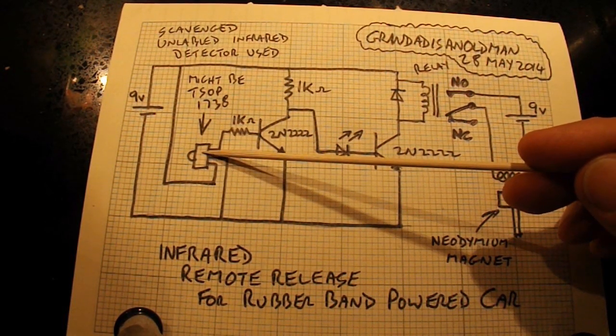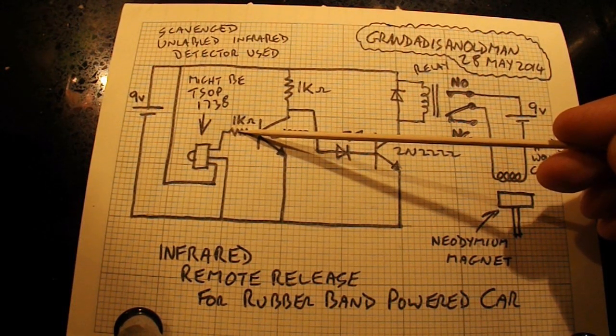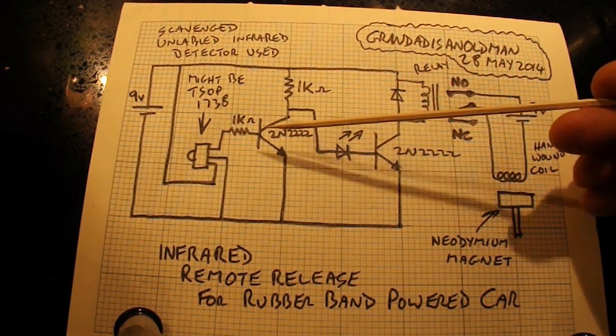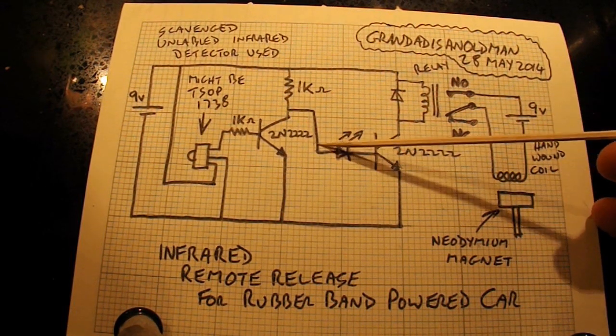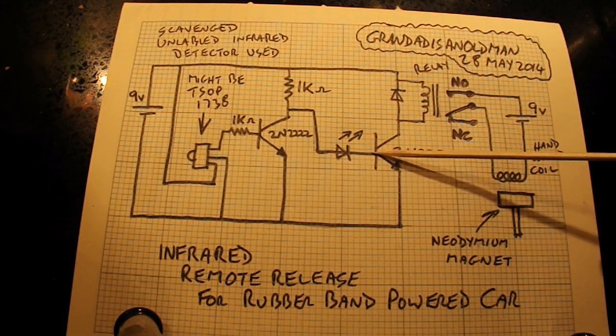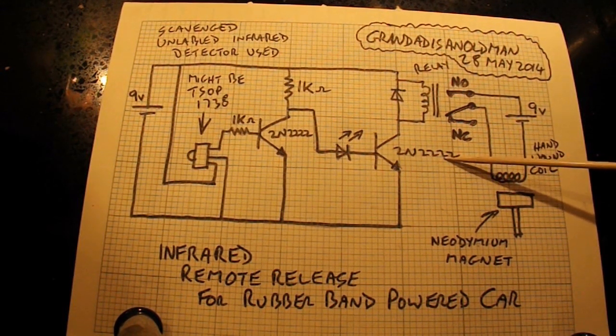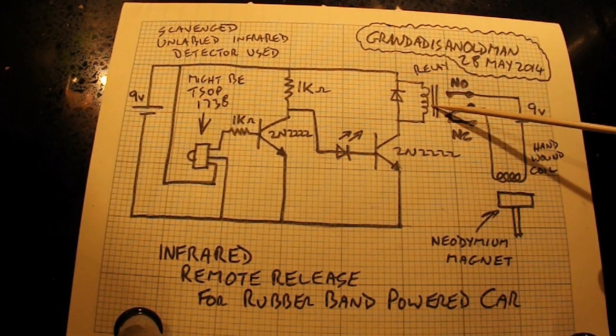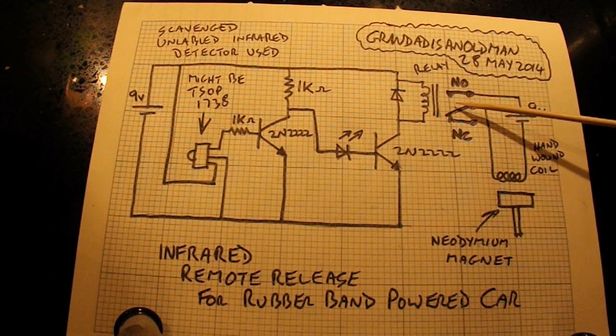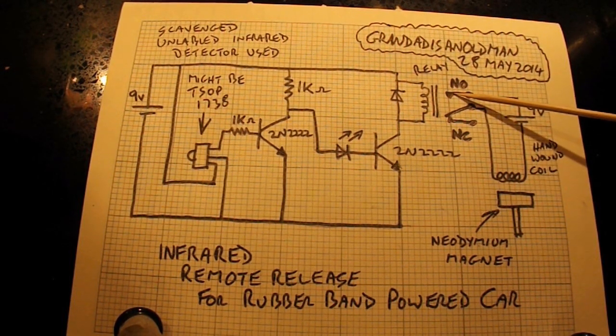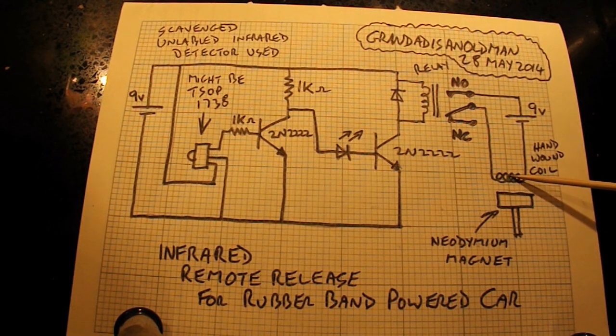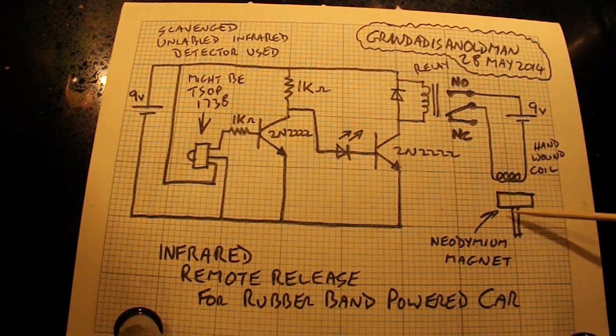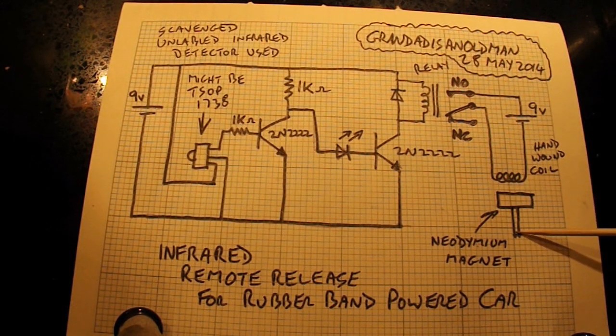So from the detector, we've got a wire with a 1K resistor on it. It goes to a 2N2222 transistor. When that's triggered, we get a feed across here via an LED to another 2N2222 transistor. And when that turns on, the current flows through this relay over here. So the contacts swing across from the normally closed to the normally open. That completes the circuit for this hand-wound coil that I made. That makes a magnetic field. That attracts my neodymium magnet, which pulls across, and that releases the wheel of the car.